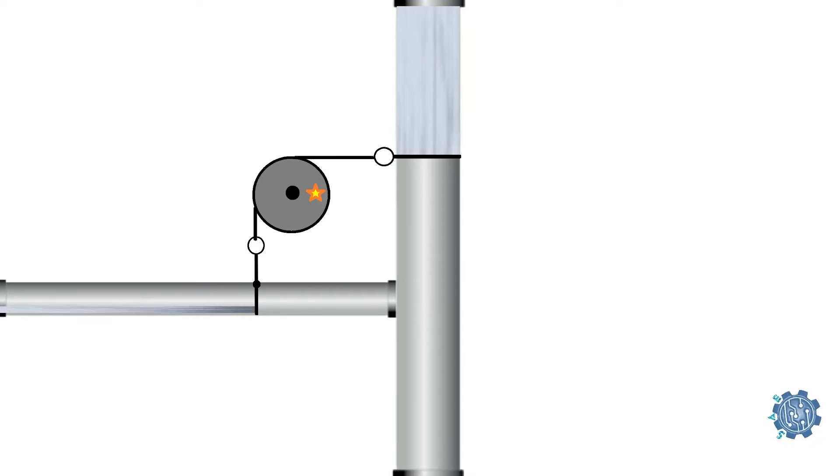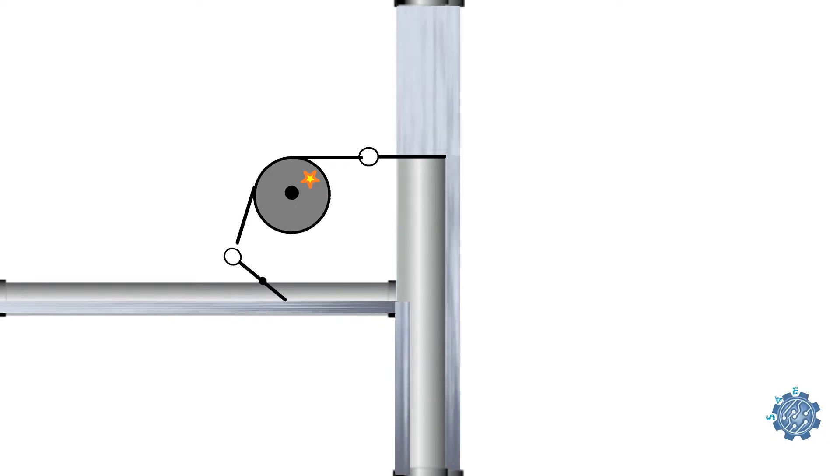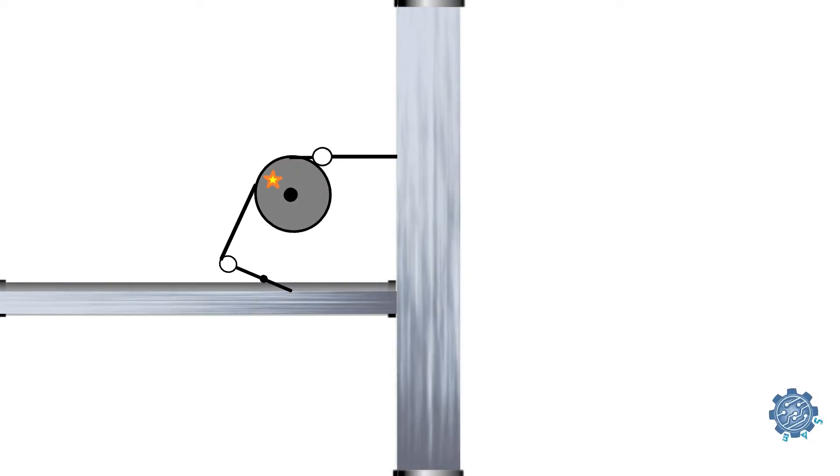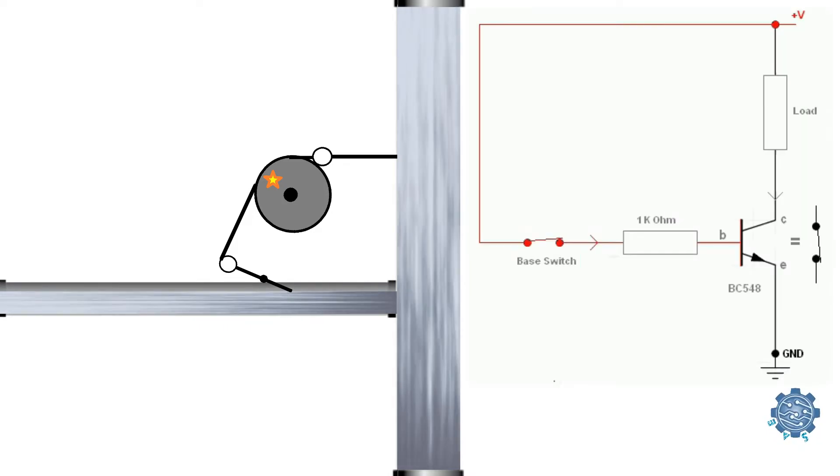The more water we have flowing in the smaller pipe, the more water will be allowed to flow in the main pipe. This is essentially how an NPN transistor works.